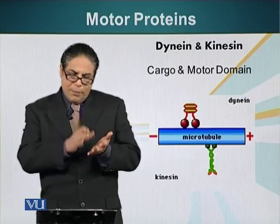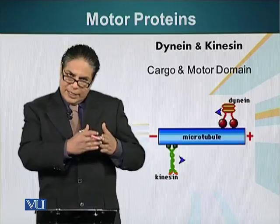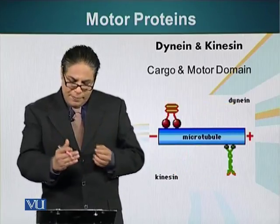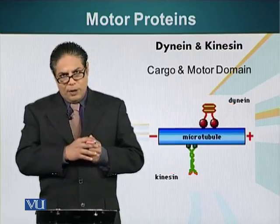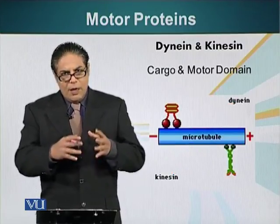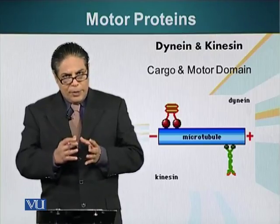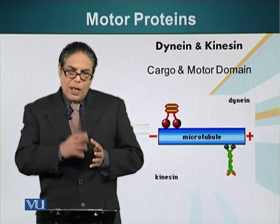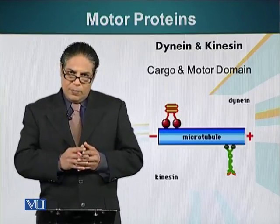As we have established, the minus end of the microtubule is towards the cell center, whereas the plus end is towards the cell periphery or the plasma membrane. For sake of generalization, we can say dynein motor proteins move towards the minus end of the microtubule, and kinesin proteins move towards the plus end of the microtubule.